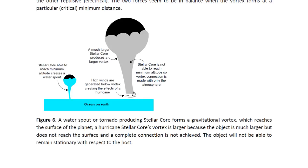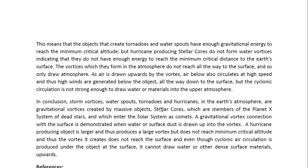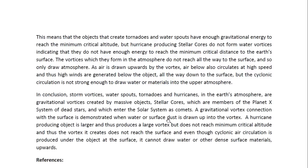The hurricane-producing object only makes a vortex connection with the atmosphere and can only draw atmosphere. It does create cyclonic winds below the vortex — what we usually call hurricane-force winds — but it is not able to draw water or dust into the upper atmosphere to become part of its atmosphere. Objects that create tornadoes and water spouts have enough gravitational energy to reach the minimum critical altitude, but hurricane-producing stellar cores do not form water vortices, indicating they lack enough energy to reach the minimum critical distance to the Earth's surface. As air is drawn upwards by the vortex, air below circulates at high speed, generating high winds down to the surface, but the cyclonic circulation is not strong enough to draw water or materials into the upper atmosphere.